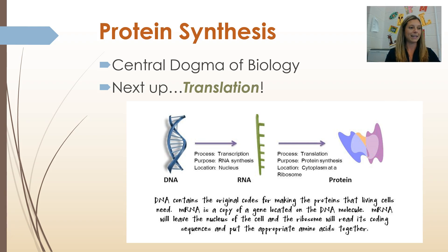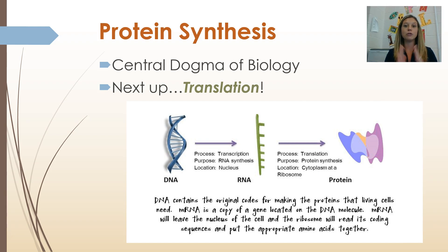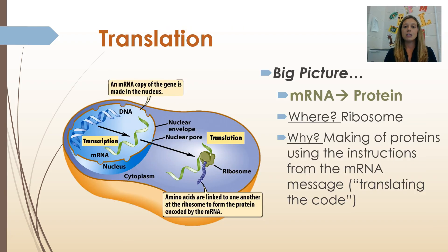We used a molecule of DNA to make a molecule of messenger RNA, because even though DNA carries the recipe it can't leave the nucleus — but RNA can. Now that we've made our molecule of messenger RNA, we have to translate it into a protein; we have to build a protein. That's translation. Transcription was using DNA to make messenger RNA; translation is taking that messenger RNA and using the instructions to build a protein — mRNA to protein.